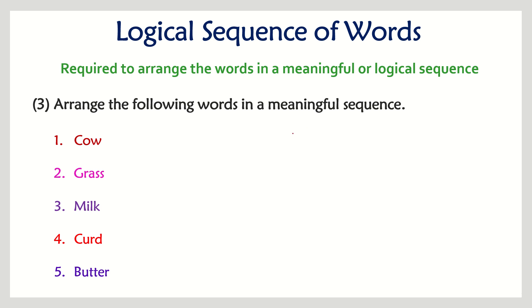The next question has the words: cow, grass, milk, curd, and butter. The correct sequence is: first we have the cow, it eats grass, then it gives milk. That milk can be converted into curd, and later you can produce butter from curd. So 1, 2, 3, 4, 5 is the correct sequence.